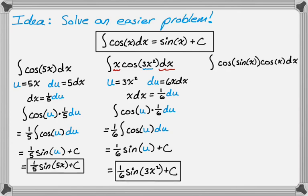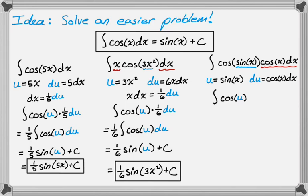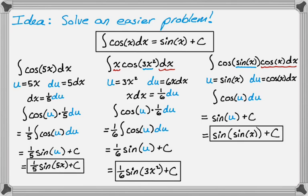Let's do one more of this type. Say we want to integrate cosine of (sine of x) times cosine of x dx. I'll let u equal sine of x, because that's the argument of the outer cosine. If you have experience with the chain rule, u is often the most nested function. So u equals sine of x, making du equal to cosine of x dx. Looking at the original, we actually have a cosine of x dx, so we can substitute directly. This gives the integral of cosine of u du, which integrates to sine of u plus c. Substituting back, we get sine of (sine of x) plus c.